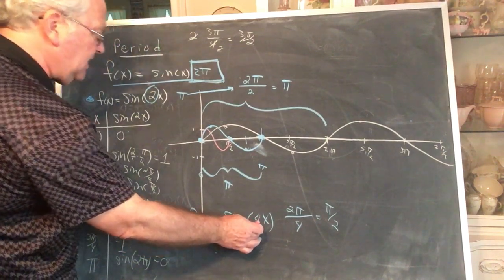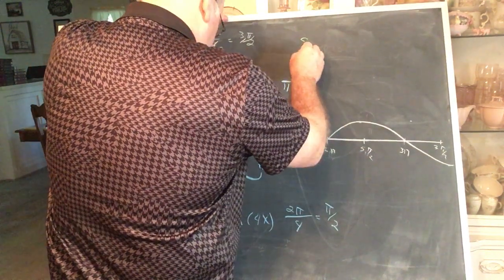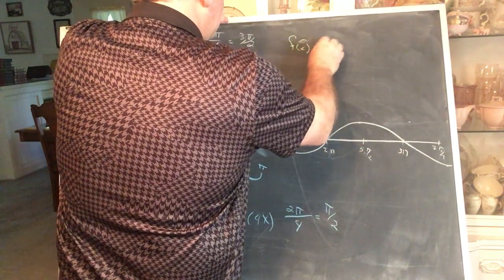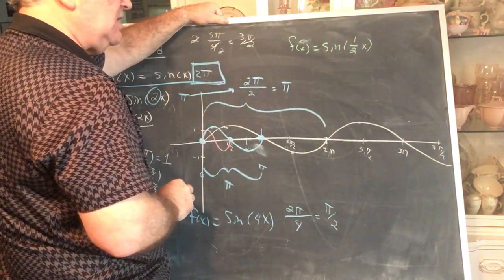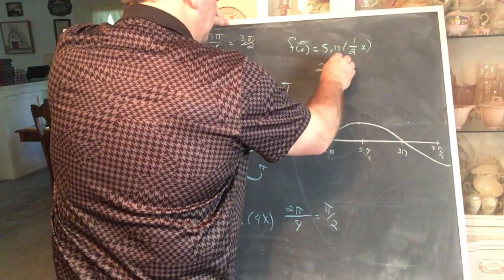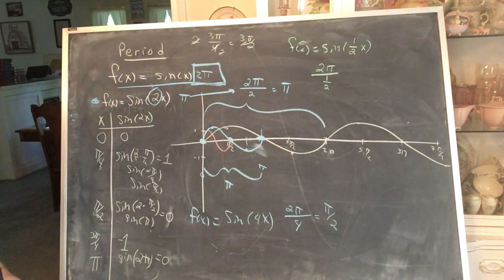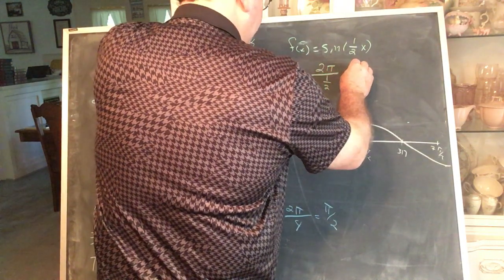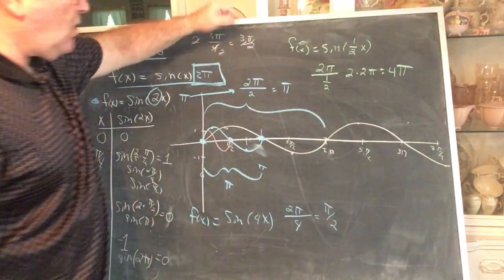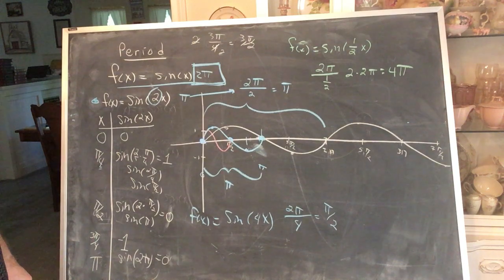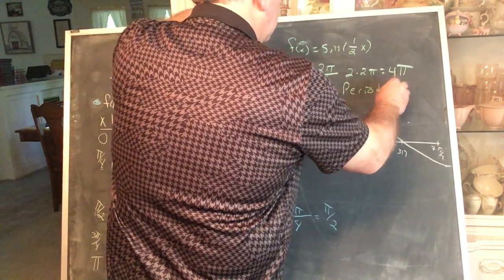So the multiplier on the inside changes the period. Now, watch this. Suppose we have, and we'll leave you with this. Suppose we have f of x is sine of 1 half x. Can you see what's going to happen? Take the original 2π, but now you divide by a half. What does it mean to divide by a half? Well, to divide by a half means you multiply by the reciprocal. So this requires 4π to go through one complete cycle. So the period for this function is 4π.